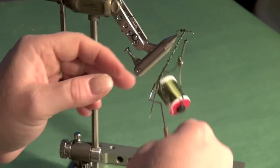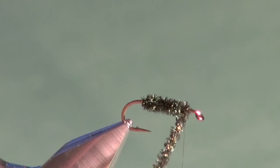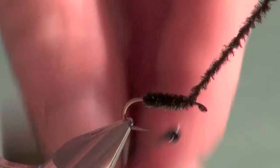Bring that herl forward, up and over, tie it off, and your peacock herl body is complete. Reinforced and ready to go.